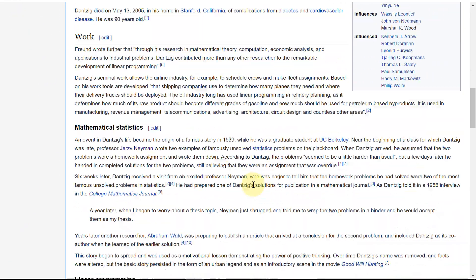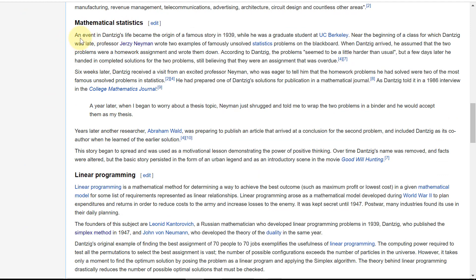There's a little bit more about it if you scroll down here. Mathematical statistics is the entry. An event in Danzig's life became the origin of a famous story in 1939 when he was a graduate student at UC Berkeley. Near the beginning of a class for which Danzig was late, Professor Jerzy Neyman wrote two examples of famously unsolved statistics problems on the blackboard. And when Danzig arrived, he assumed that the two problems were just a homework assignment, and he wrote them down. According to Danzig, the problems seemed a little harder than usual, but a few days later, he had handed in completed solutions for the two problems, still thinking, still believing that the assignment was overdue.